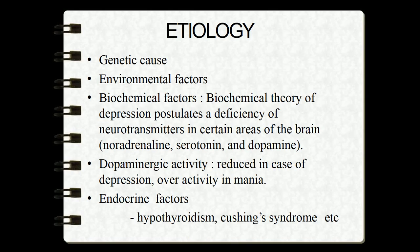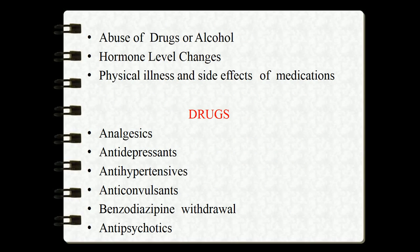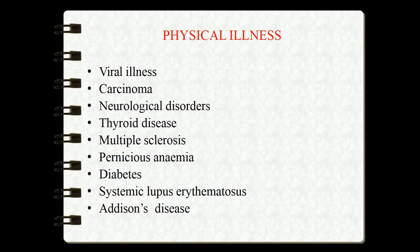Endocrine factors include hypothyroidism, in which the thyroid gland secretes low quantities of thyroid hormones, and Cushing's syndrome. Abuse of drugs or alcohol, hormone level changes, physical illness, and side effects of medication are also etiological factors. Drugs involved include analgesics, anticonvulsants, benzodiazepine withdrawal, and antipsychotics. Physical illnesses include viral illness, carcinoma, neurological disorders, thyroid disease, multiple sclerosis, pernicious anemia, diabetes, systemic lupus erythematosus, and Addison's disease.